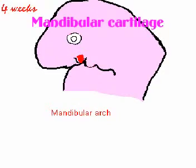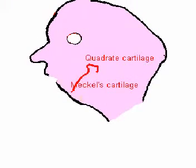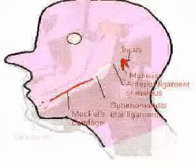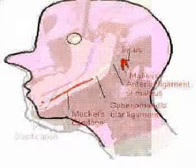The mandibular arch gives rise to muscles of mastication: the temporalis, the masseter, and the medial and lateral pterygoid. The mandibular cartilage forms Meckel's cartilage, the quadrate cartilage, the auditory ossicles, the anterior ligament of the malleus, and the sphenomandibular ligaments.